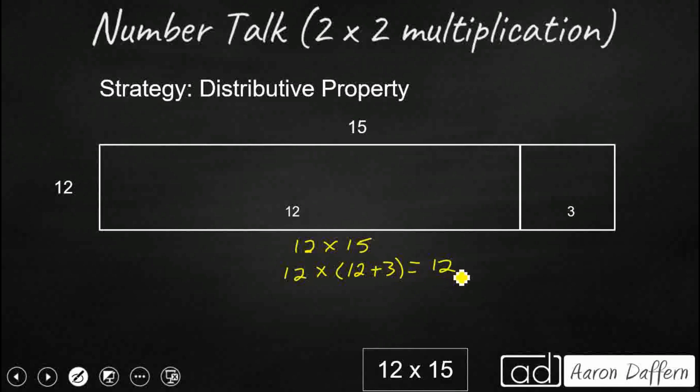So if we say, well, that's 12 times 12. That's going to be our partial product. Most of us can rattle that off. We can say 144. And then we just need to add this other 12 times 3, 36. We need to add that 144 and 36. We need to carry a little bit, but we're still going to get our same answer of 180.